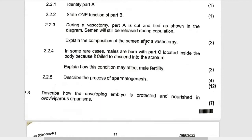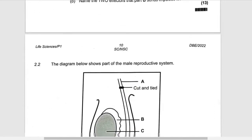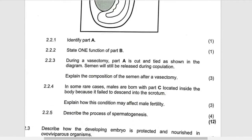Basically, semen will not contain sperm because now it has been blocked. If you look at it here, the sperm are here — they have been blocked. It means that they can't go up. So basically, the semen won't contain sperm.